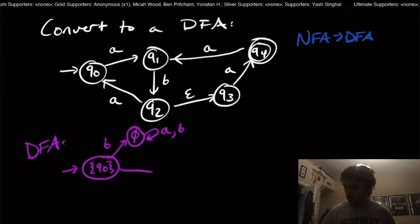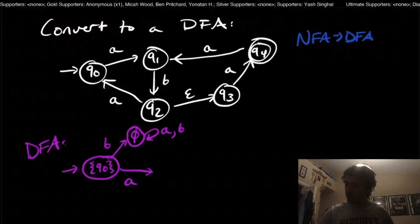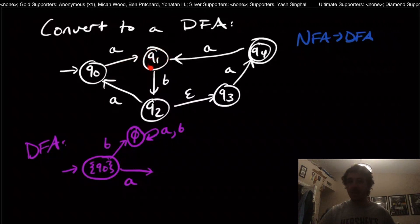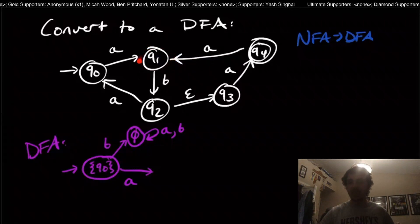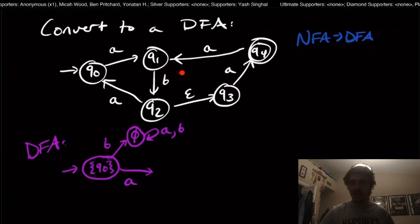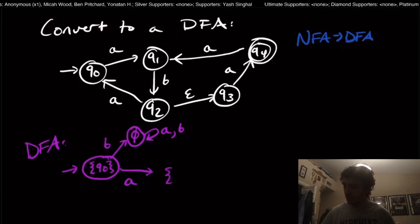Now we just need to figure out where to go on A. There's only one transition out of q0 — it goes to q1. Now we have to think about the epsilon closure of q1. q1 doesn't go anywhere on epsilon transitions, so the epsilon closure is just q1 only.